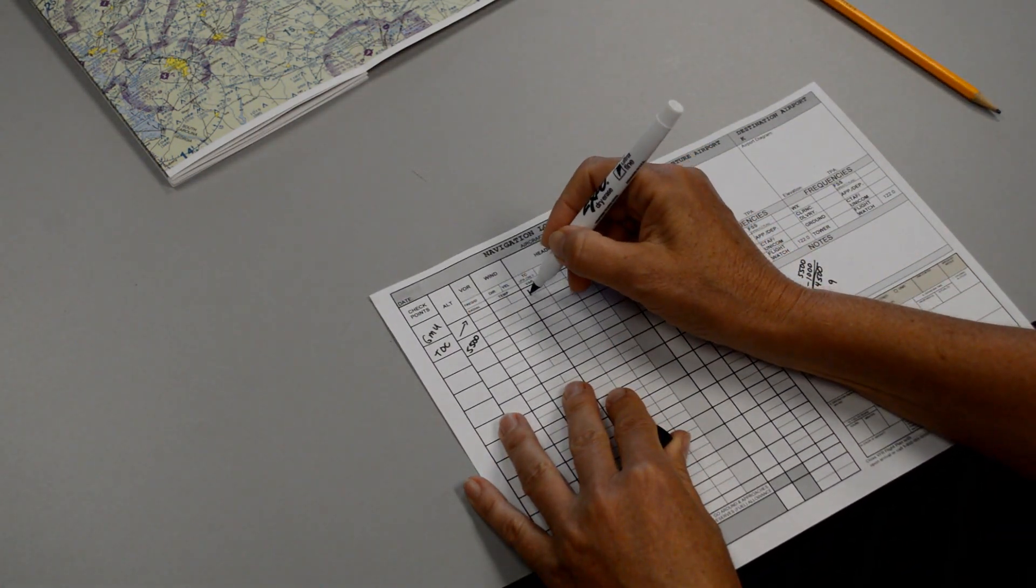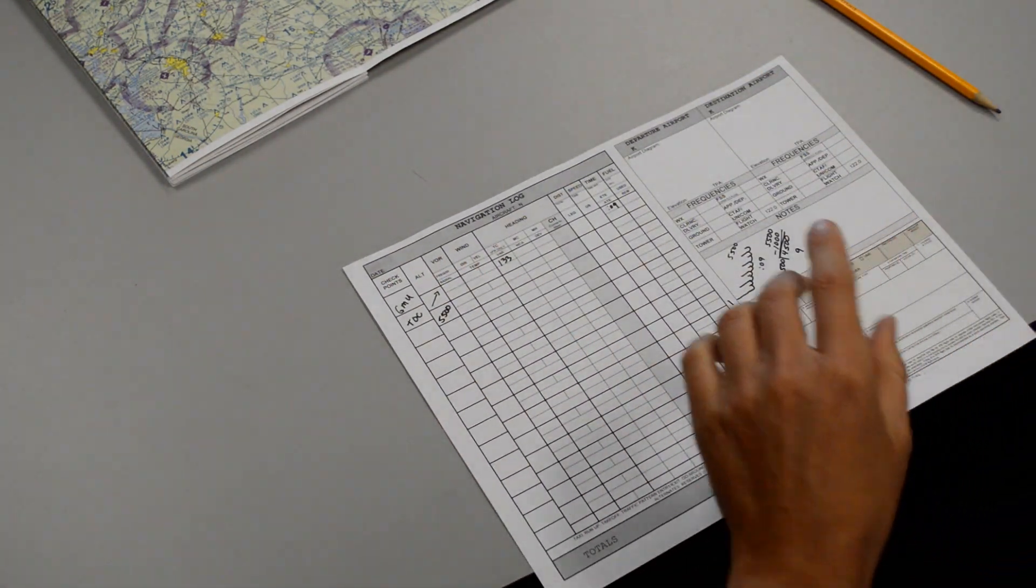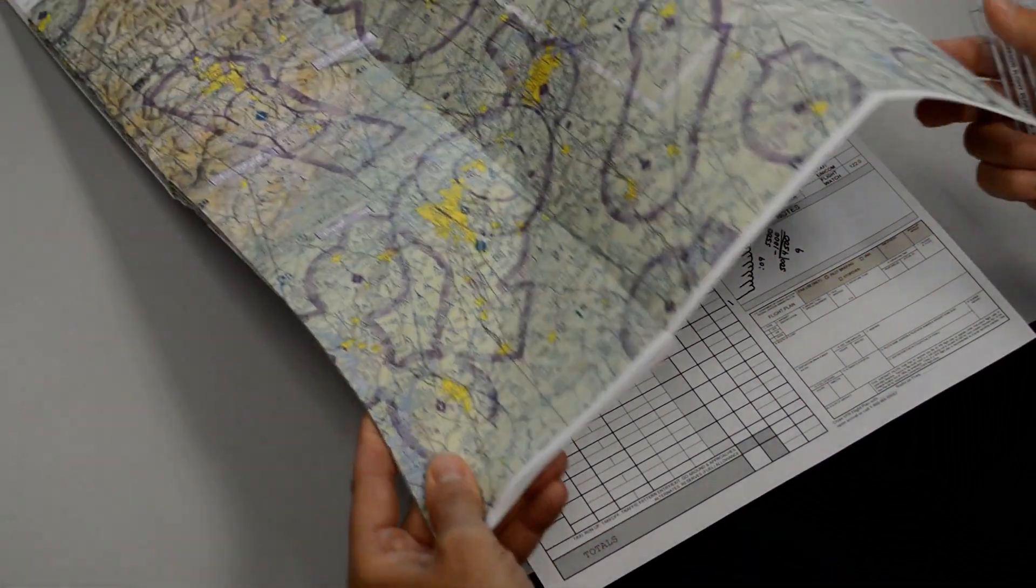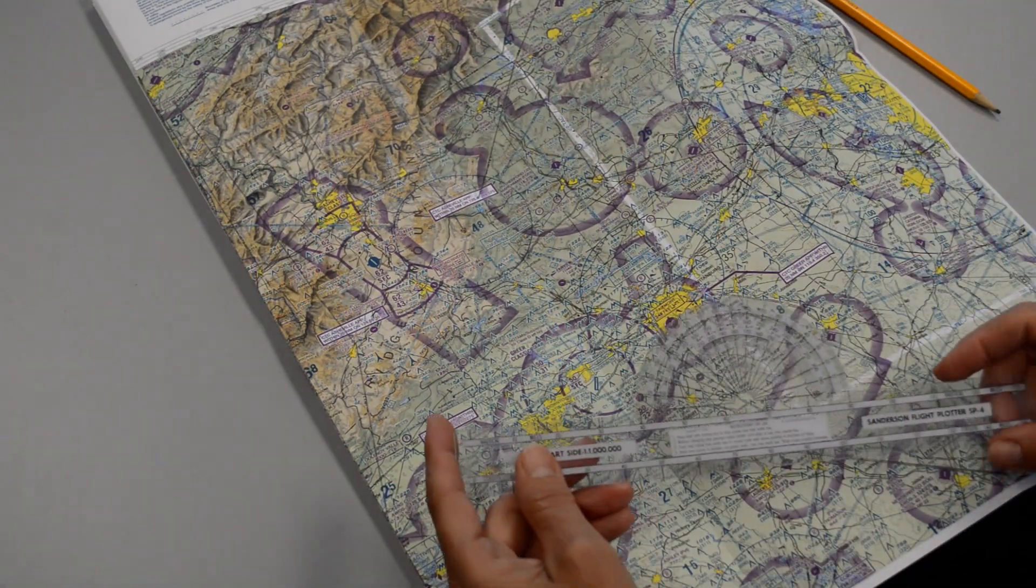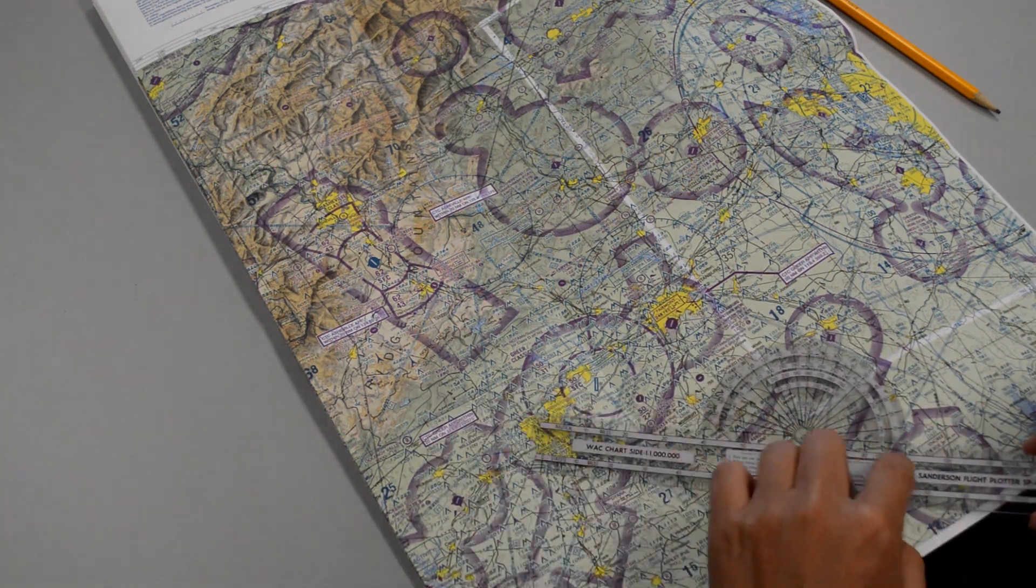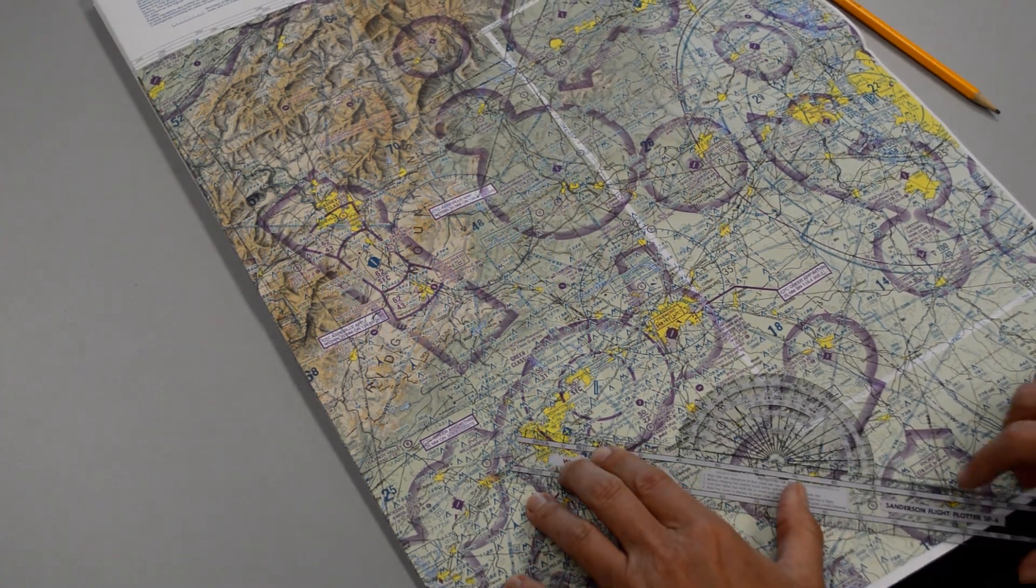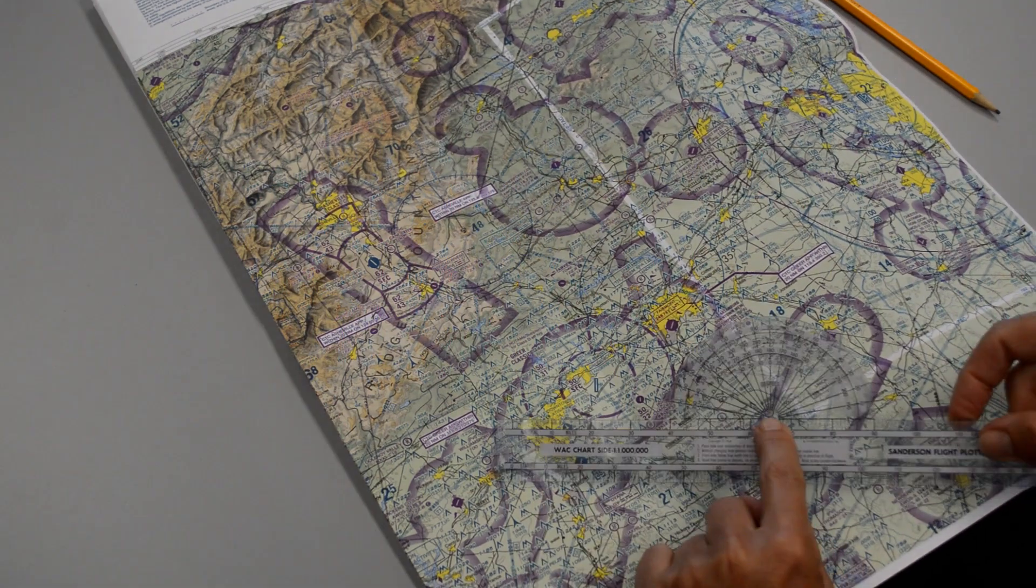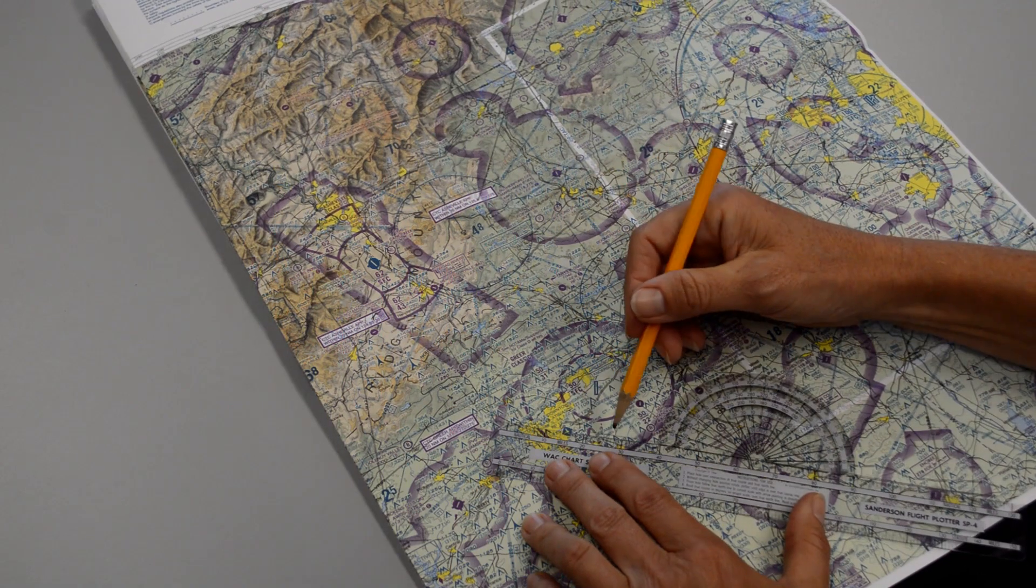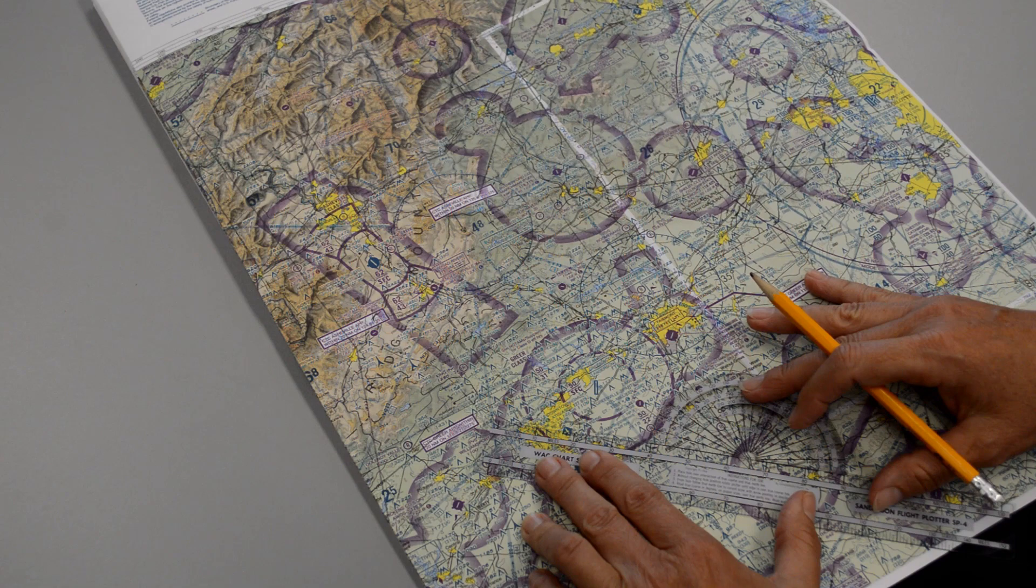So on the true course, 133 goes there. Now, I promised you I would show you how to find your true course with the older style plotter, which works very similar. So here is the older style plotter. We're going to again place a straight edge on the plotter on our line that we drew, but this time I need to make sure that I put the center grommet on one of the longitudinal lines.